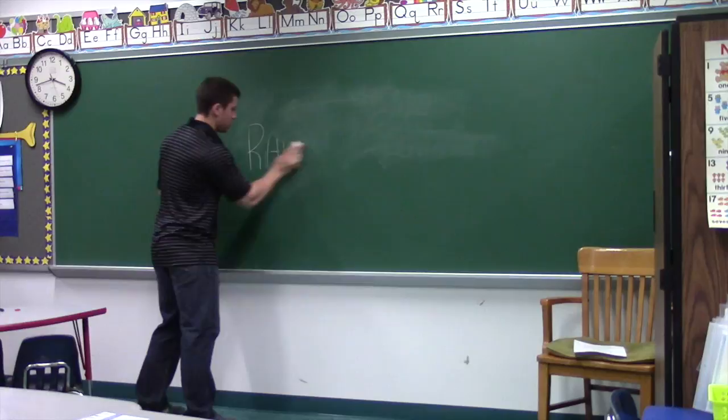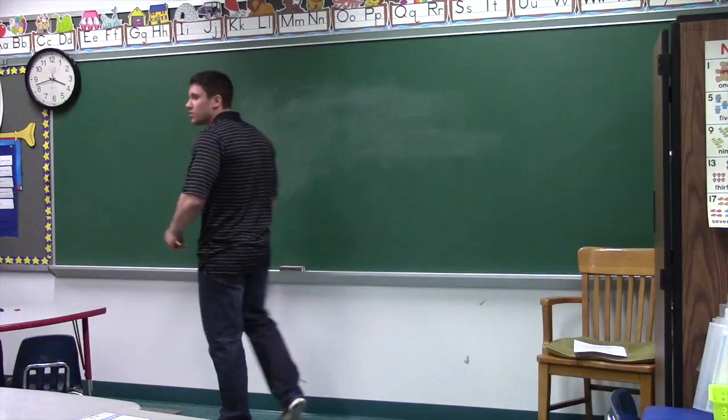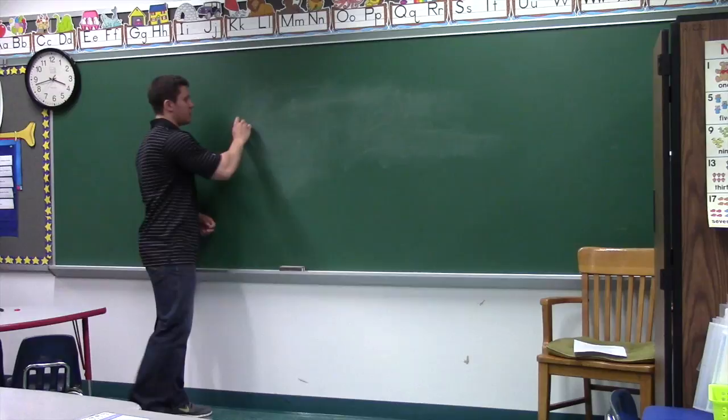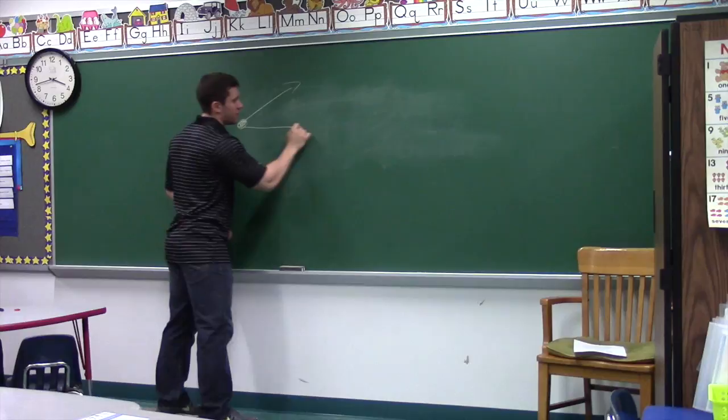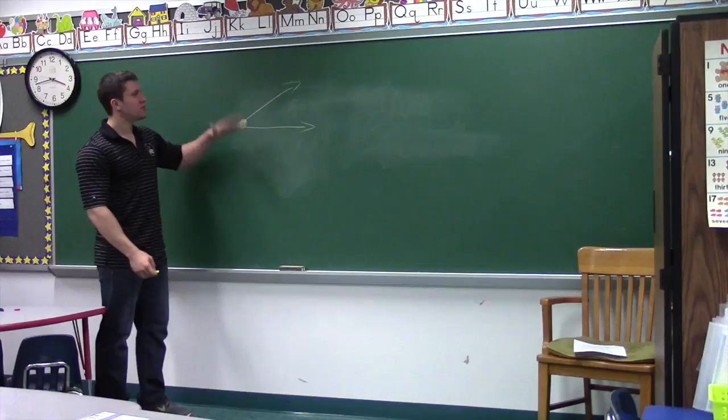If we have two rays that share a common endpoint — an endpoint, a ray going off that way, a ray going off this way — and they form something, they're not the same ray. They form something, and we call that an angle. They form an angle. This is a diagram of an angle.